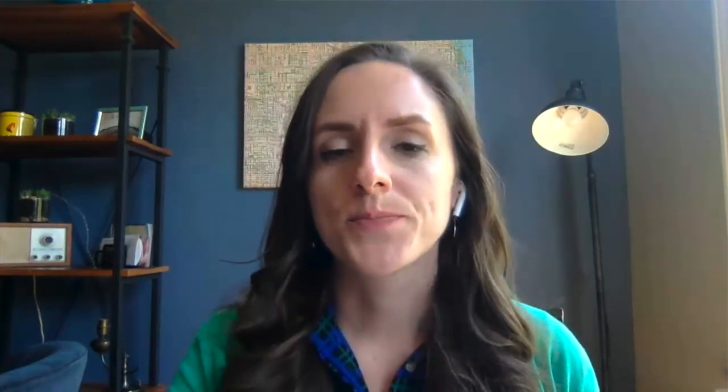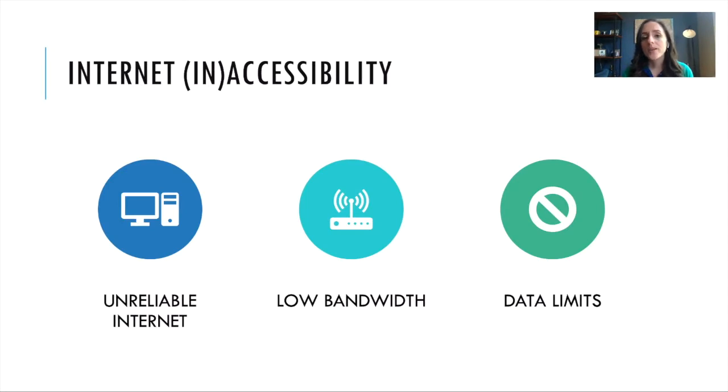So we certainly need to think about students who may not have the access necessary to join a Zoom call, which takes up a lot of bandwidth, or accessing large files, large images, things like that. Internet accessibility, as I've mentioned, is unreliable internet — that can be a very slow connection, or internet that goes in and out frequently.